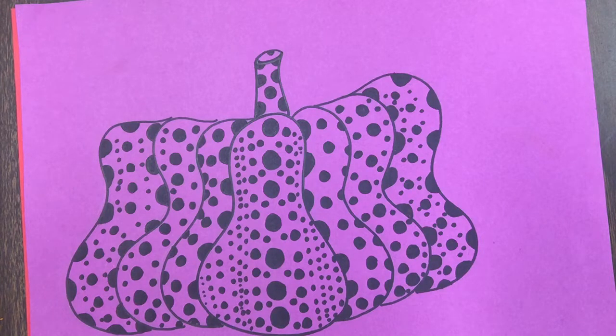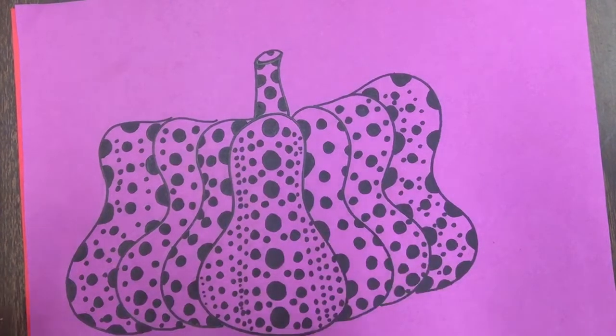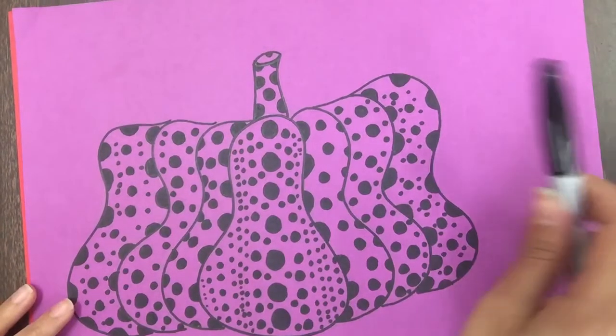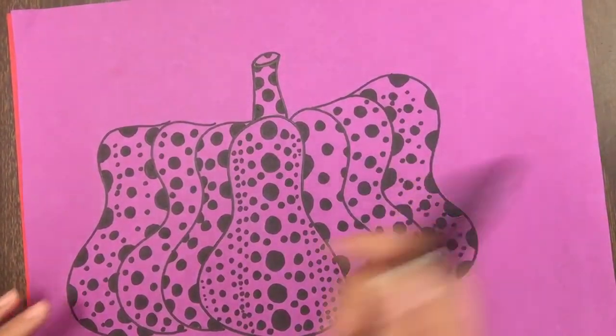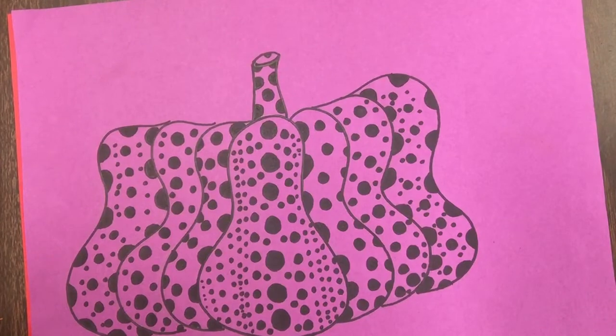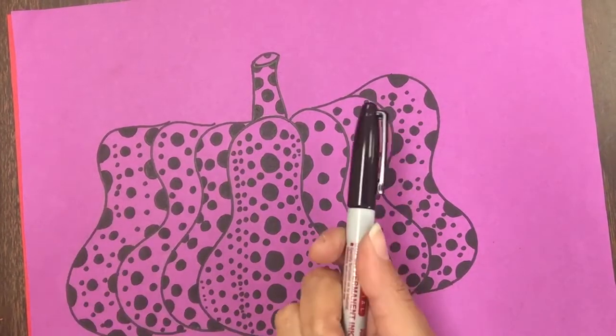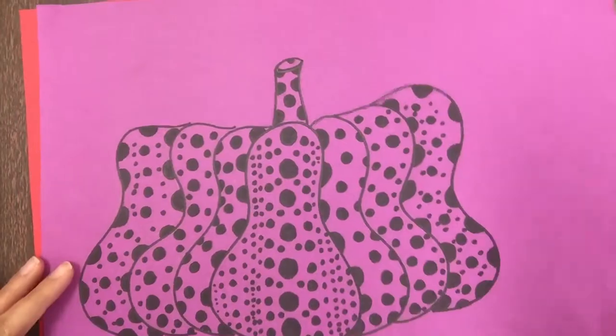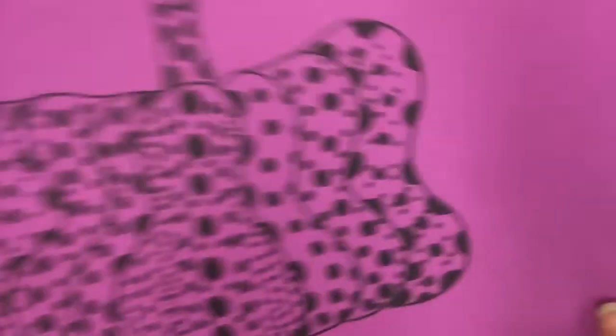Well, let's get started. What are you going to need for your pumpkins? You're going to need something to draw with. If you want to use a pencil first, you can definitely use a pencil and then trace over it with a Sharpie or a black marker or crayon. You're going to need a piece of construction paper. If you do not have colored paper, then you can use white paper, draw your pumpkin, and then color over it after.